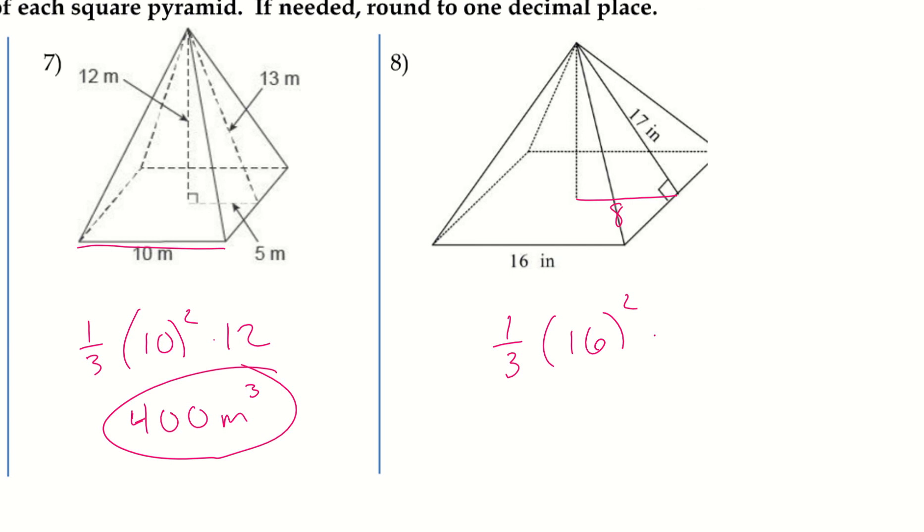So, then we have this right triangle. So, I have 8, 17, and so this is going to be 15. So, it's an 8, 15, 17 Pythagoras triple.